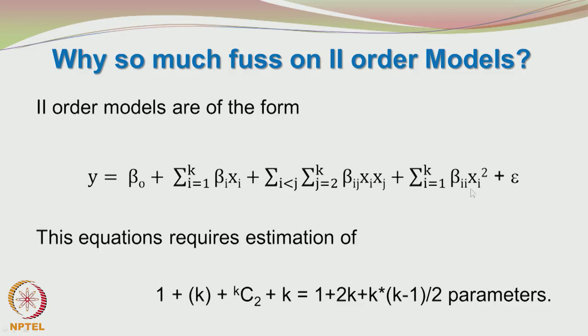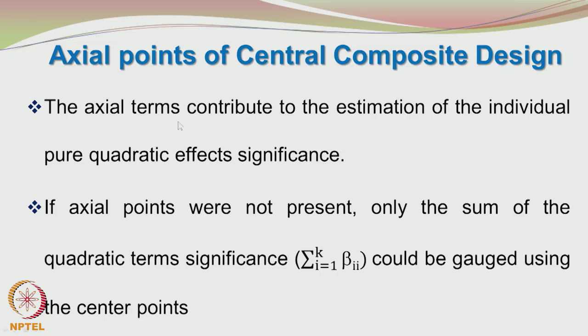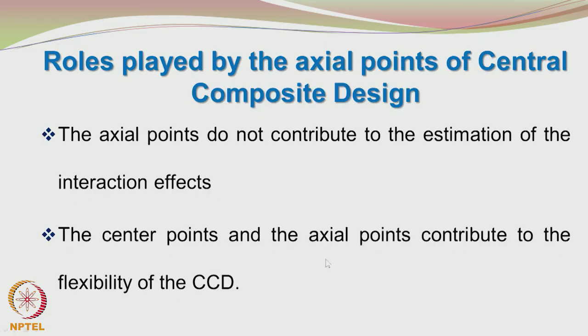To find the beta 11 and beta 22 you require center points. Even though you may not be able to find out explicitly beta 11 and beta 22, at least it will tell you whether beta 11 plus beta 22 is overall significant or insignificant. If beta 11 plus beta 22 is insignificant, then both the beta 11 and beta 22 are not required to be present in the model. What is the contribution from the axial points? The axial points contribute to the estimation of the individual pure quadratic effects significance. If the axial points were not present, only the sum of the quadratic terms significance could be gauged using the center points. The axial points do not contribute to the estimation of the interaction effects. The center points and the axial points contribute to the flexibility of the central composite design.